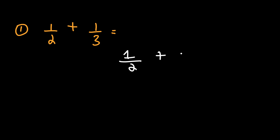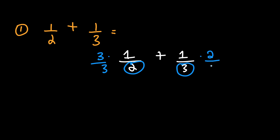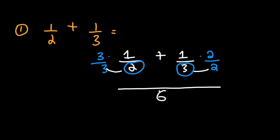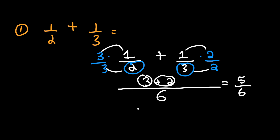Let me rewrite this problem. Let's take the three and multiply it on both sides, and take the two and multiply it on the other side. This way we can easily make the denominators the same. Three times two is six, and two times three is six — so the denominator is six. Now three times one is three, and one times two is two. Three plus two gives us five over six.